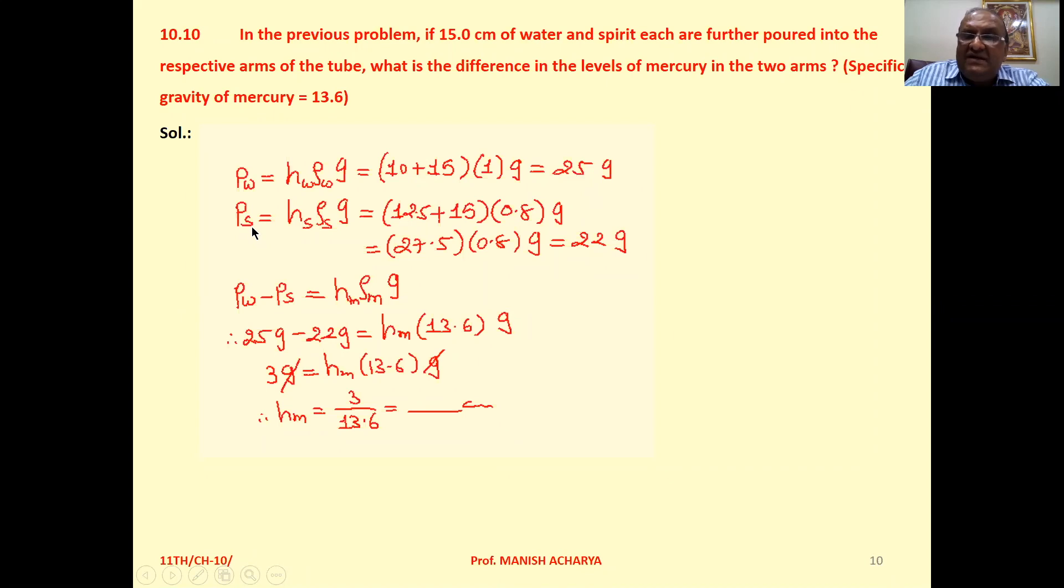Then pressure exerted by spirit column, that is H spirit times rho spirit times G. Initially the height of the spirit column was already 12.5 and above it additional 15 centimeters spirit is poured. So the total spirit column with height 12.5 plus 15, its density that is 0.8 into G. Resultantly you will get 27.5 into 0.8 into G, so you will get 22G.